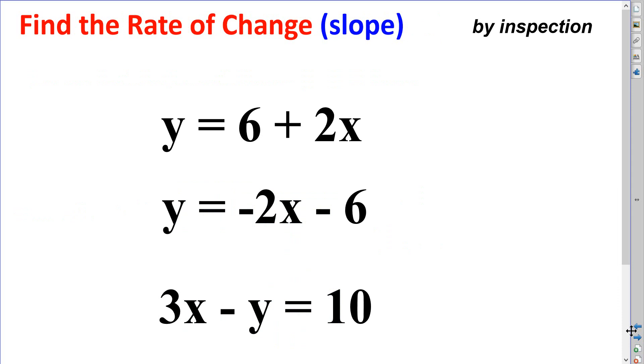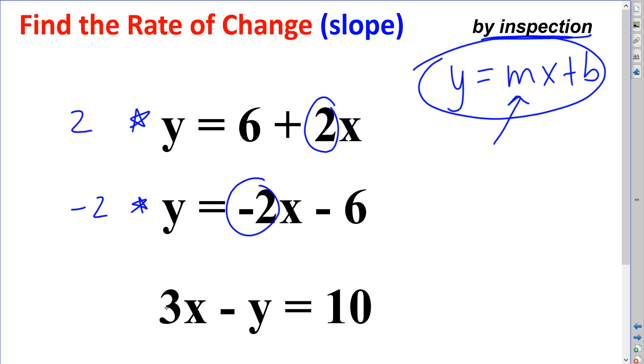When you have an equation, if it is set up in slope-intercept, or y equals mx plus b form, you can find the rate of change just by inspection. That means just by using your eyes. The coefficient of x will be the slope. So the rate of change for the first question is 2, the second is negative 2. The third question cannot be found just by inspection. I would need to manipulate this to get y all by itself, moving 3x to the other side, then dividing by negative 1. Now I can see that the slope is positive 3.